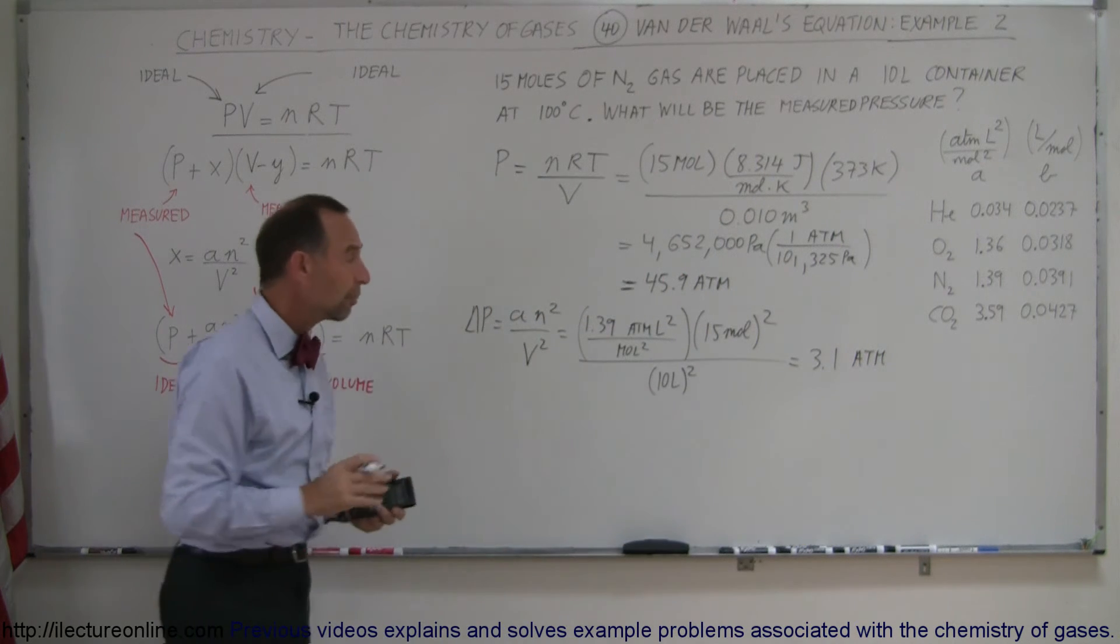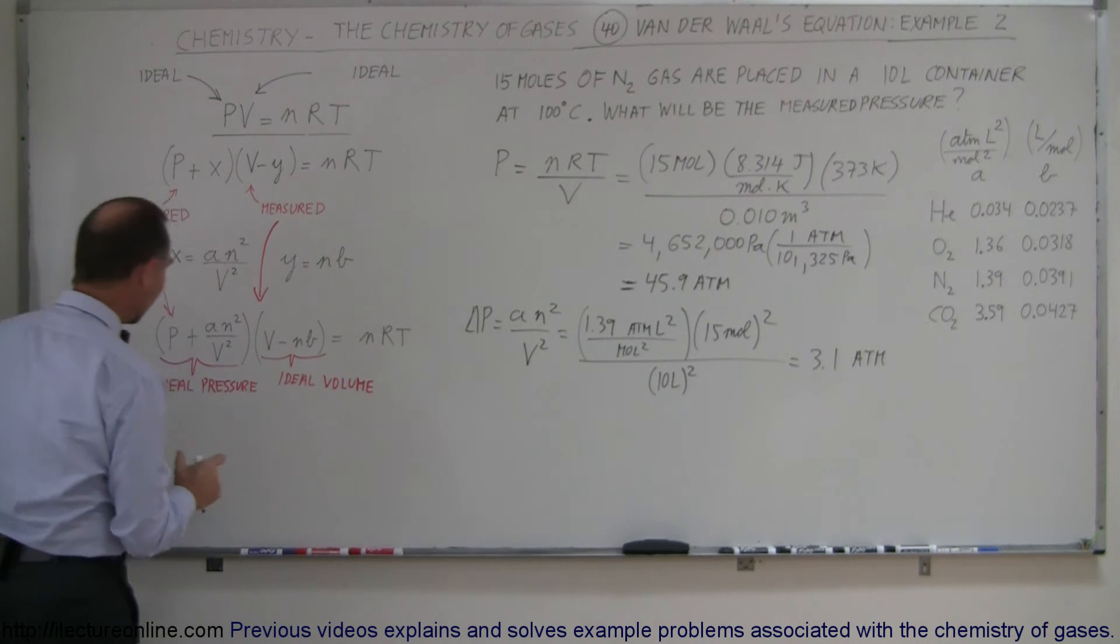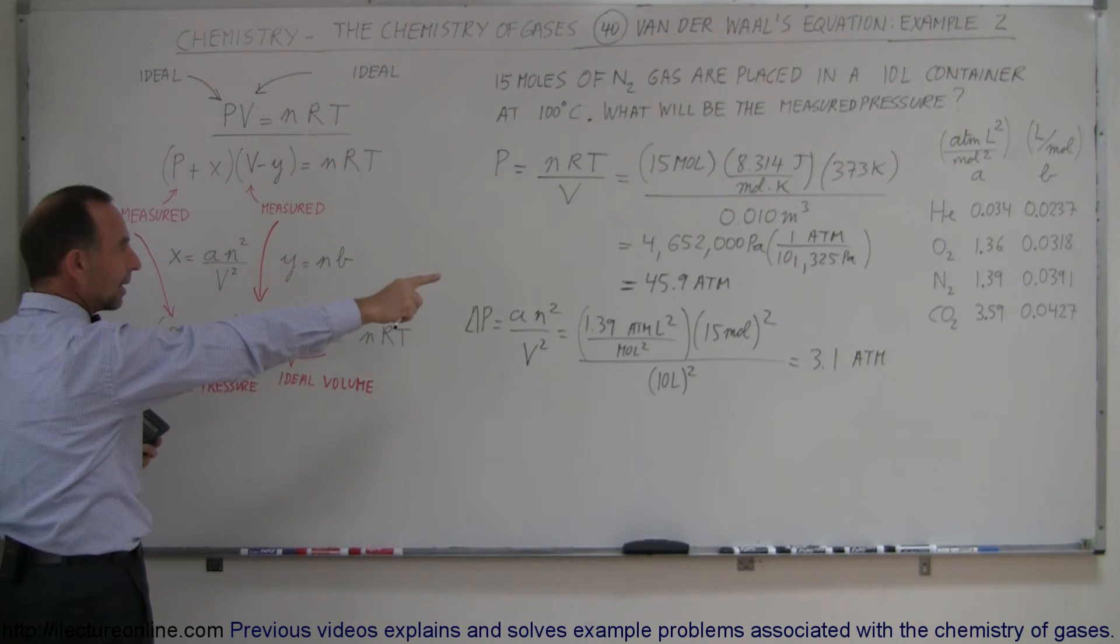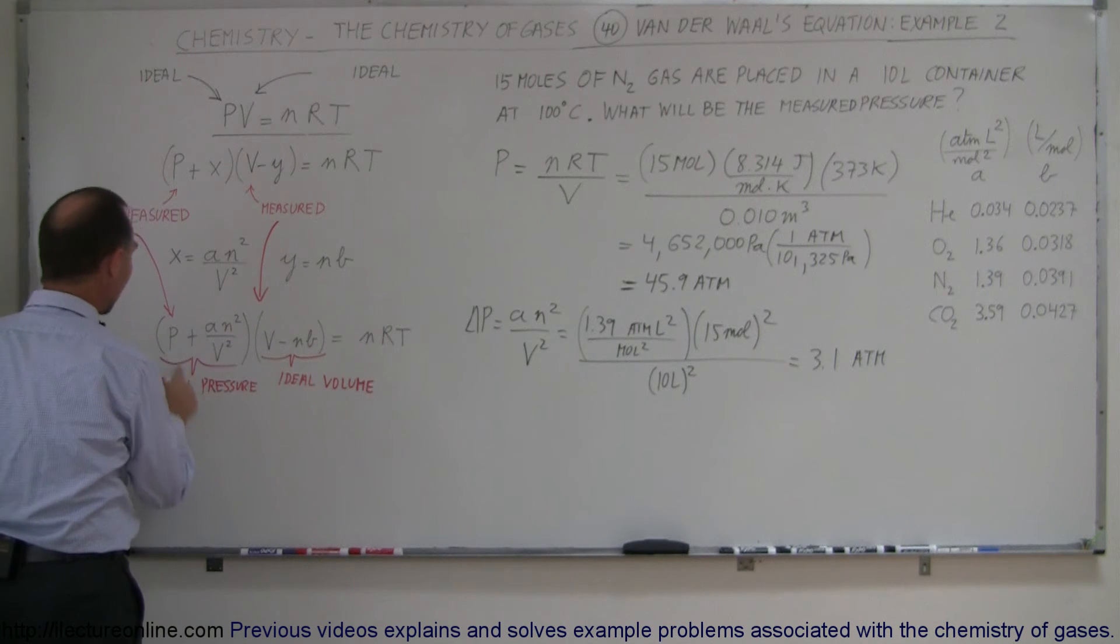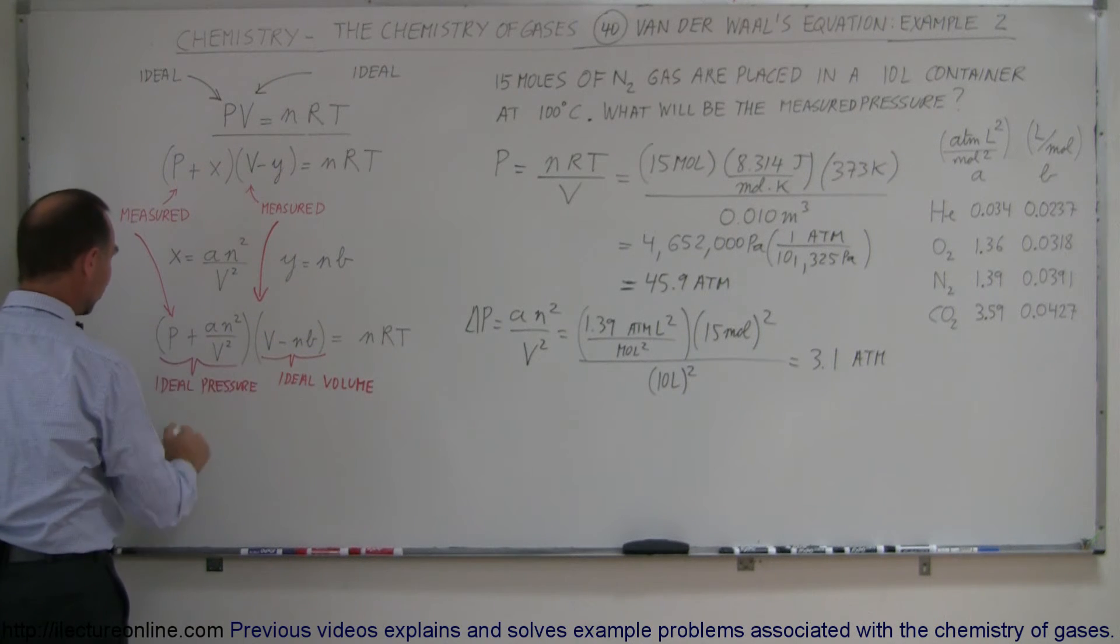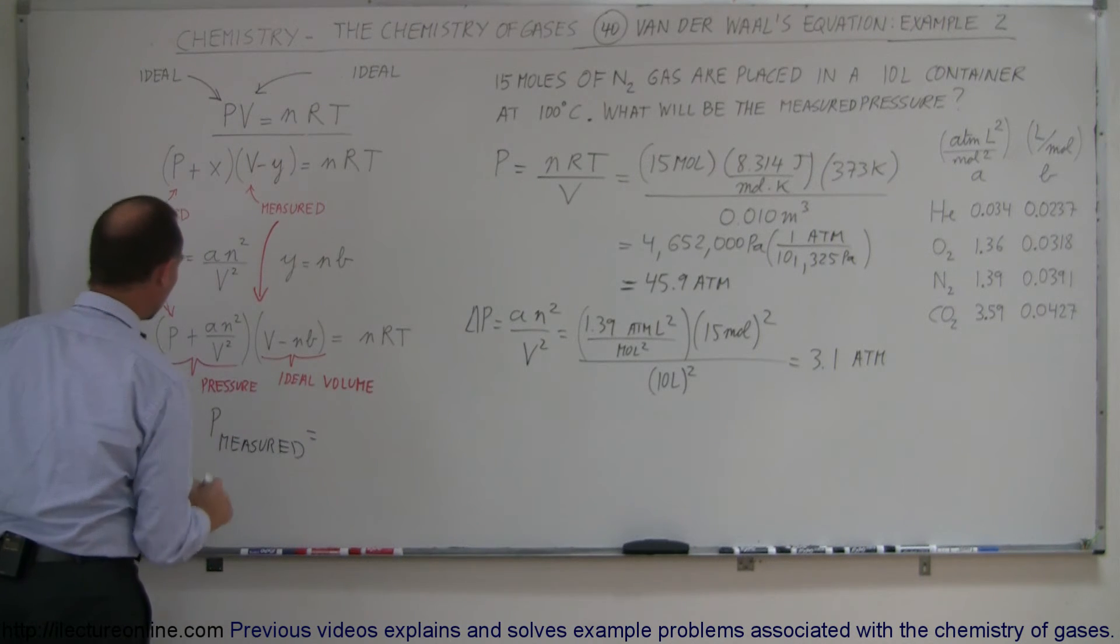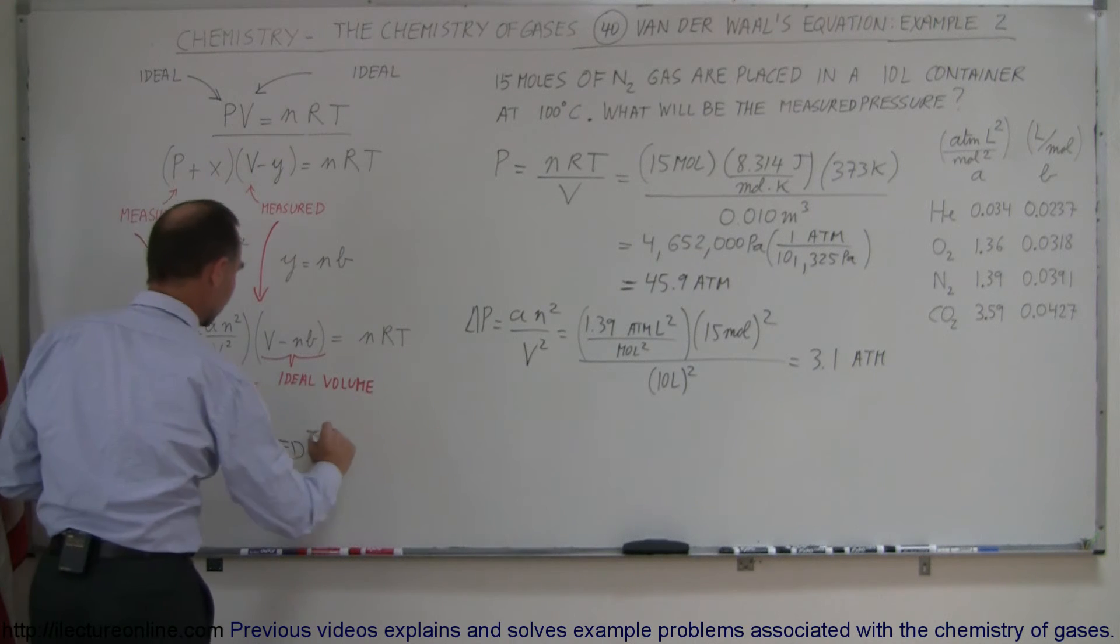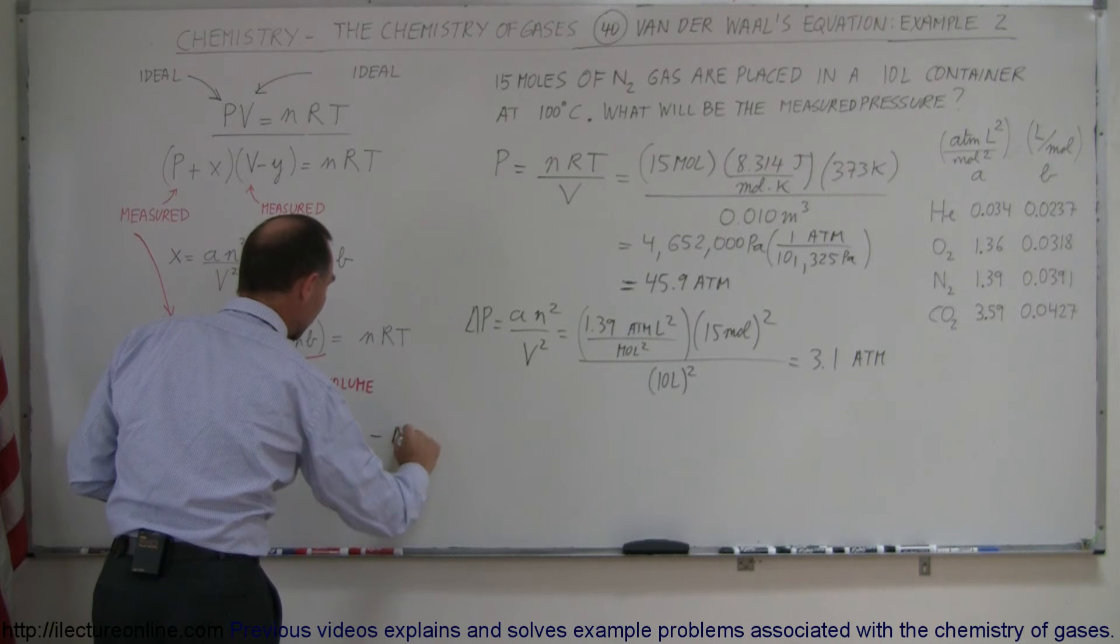So that's the change in the pressure. What does that mean? Well, that means that the ideal pressure is going to be the measured pressure plus the adjustment factor. But since we already calculated the ideal pressure and we calculated the change in the pressure, we can use that to find the measured pressure. So notice that the measured pressure P measured is equal to the ideal pressure, pressure ideal, minus the adjustment factor, the delta P.